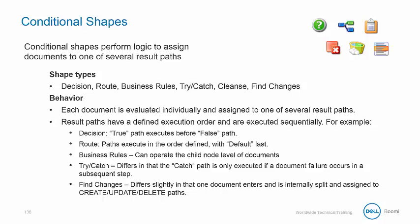Business rules can operate at the child node level of documents. The try-catch differs in that the catch path is executed only if a document failure occurs in a subsequent shape. Find changes differs slightly in that one document enters and is internally split and then assigned to a create, update, or delete path.